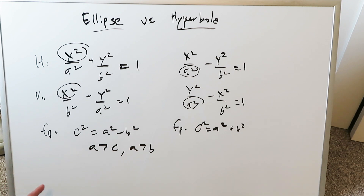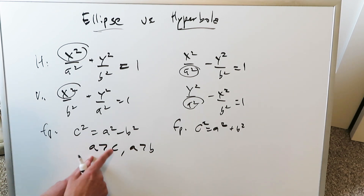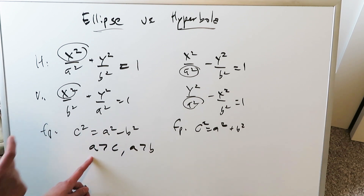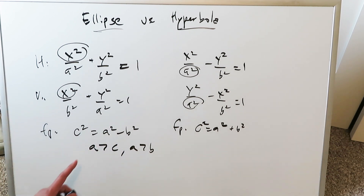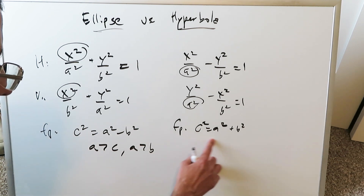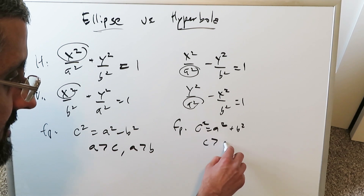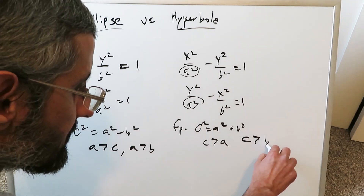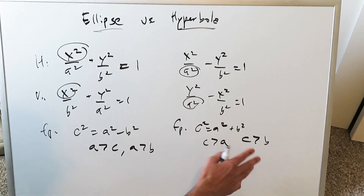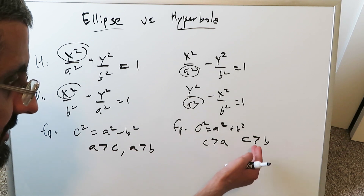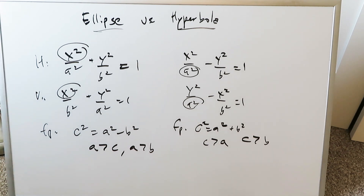You have to understand that, because the vertex of an ellipse is located further away from the center than the focal point, and then the minor axis end point. Remember that: a is larger than c, a is larger than b. For the hyperbola, where c squared equals a squared plus b squared, c is larger than a and c is larger than b. In this particular conic section, the focal point is located further away from the center than is the vertex.